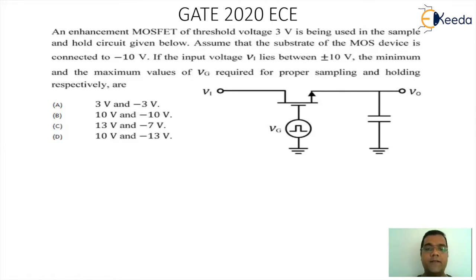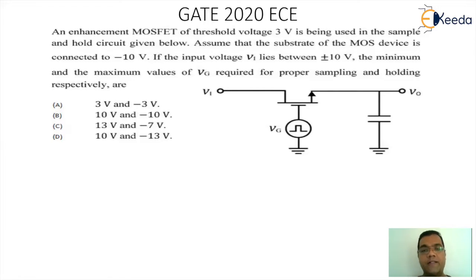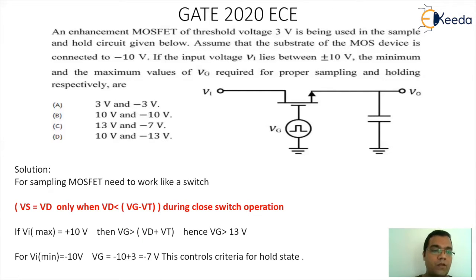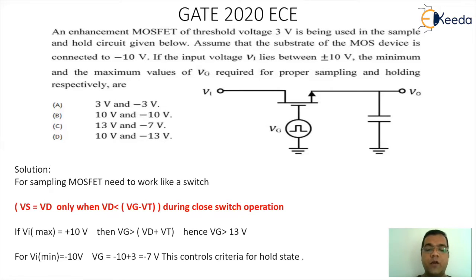So what do we want actually? We want the MOSFET to work as a switch. When the MOSFET has to work like a switch, the energy at the drain is supposed to be passed to the source point, which implies the value of VD should match the value of VS. So for sampling, the MOSFET needs to work like a switch, meaning VS should equal VD, and that is possible only when VD is less than VG minus VT during the closed switch operation.